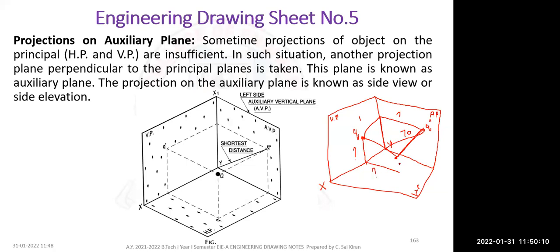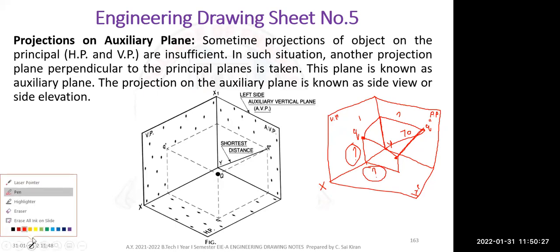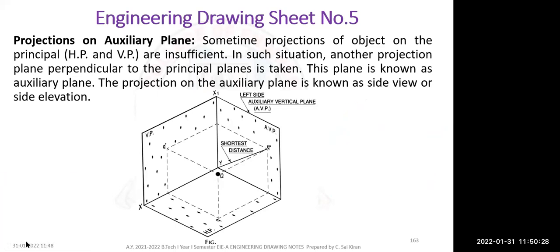This is an equidistance problem. Whenever it is equidistant, the H value and D value are both the same. Based on this condition, you have to draw the three views: front view, top view, and side view.